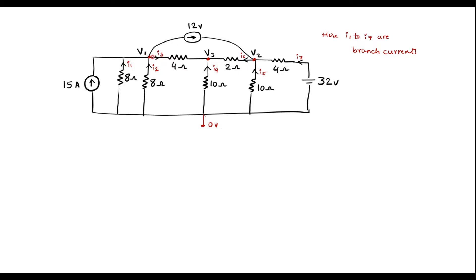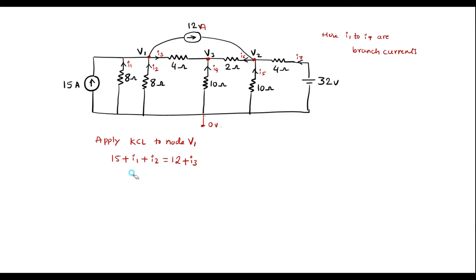Now let me apply KCL to node V1. Kirchhoff's current law states that incoming current is equal to outgoing current. At this node, current 15A, I1 and I2 are incoming; 12A and I3 are outgoing. So: 15 + I1 + I2 = 12 + I3, which gives 3 = I3 - I1 - I2.